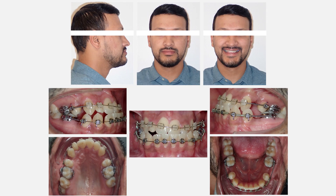Looking at the extra-oral and intra-oral pictures, the patient has a classic Class 3 profile. Intra-oral exam demonstrated Class 3 molar and canine relationships. There was severe crossbite, a cant of the occlusal plane both posteriorly and anteriorly, and the mandible was significantly shifted toward the right side.